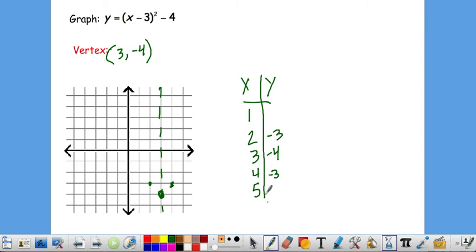And then finally, we can plug in 5. 5 minus 3 is 2. 2 squared is 4. 4 minus 4 is 0. So we can plot it there. We can reflect it over. And then I will just do my best to sketch out a smooth line.